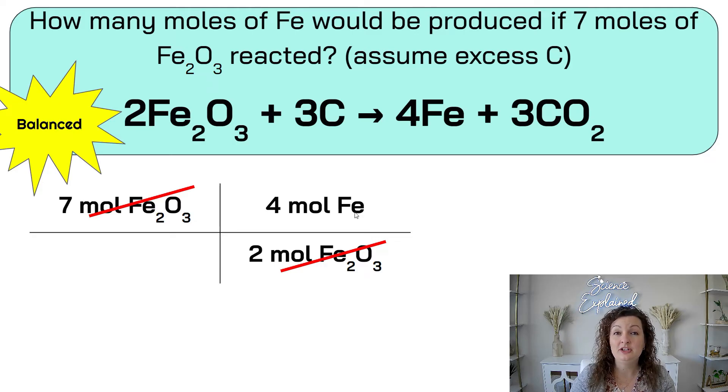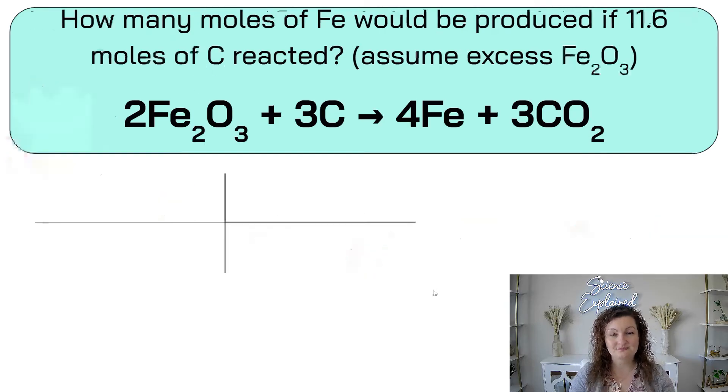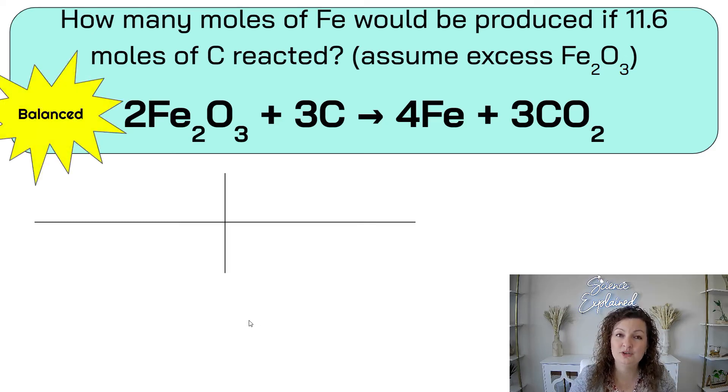The number up top, it's going to be where the question is asking you for. So the question says, how many moles of Fe? That means we're going to have moles of Fe up top. So we need to look for Fe, which is right here, and it is 4. So the top is going to be 4 moles of Fe, and the bottom is going to be 2 moles of Fe2O3. Now we can cancel out those units, and we're ending up with moles of Fe, which is perfect. That's exactly what we want. So now we can do our math. We're going to multiply the top, so 7 times 4, and then divide by the bottom, divide by 2, and you end up getting 14 moles of Fe. Let's do another one.